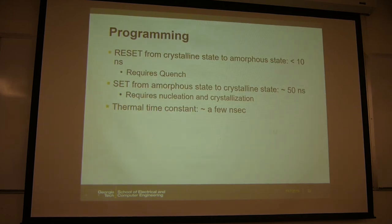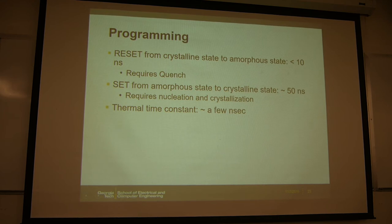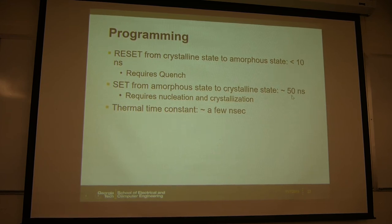Here are the typical programming conditions. For reset, you need a fast quench — typically removing the pulse in less than 10 nanoseconds. For set, you use a lower amplitude but longer duration — for example 15 nanoseconds — to allow recrystallization.